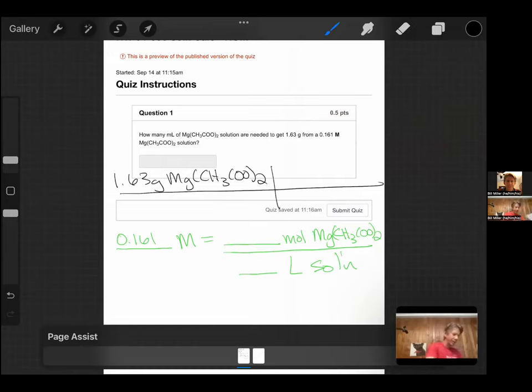I have my periodic table around here somewhere. Let's rewrite this. This is going to be magnesium, C2, H6 because two times three, and O4 because two oxygens times two. This version of the formula will make it easier to find the molar mass.